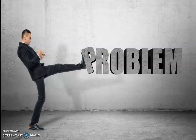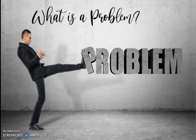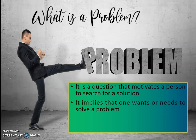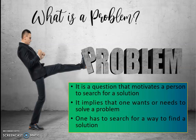Let us define problem. What is a problem? It is a question that motivates a person to search for a solution. It implies that one wants or needs to solve a problem, and one has to search for a way to find a solution. In short, if there's a problem, there must be a solution. We have to look for a solution for that specific problem. For example, if we don't have food on our dining table, we have to look for food by buying or cooking, so that our problem will be solved. The purpose of having a problem is to search for a solution.